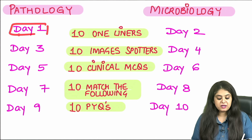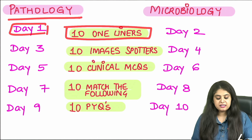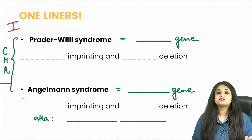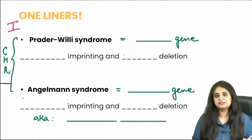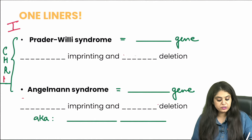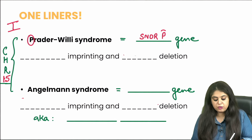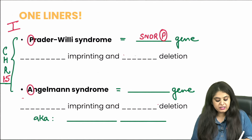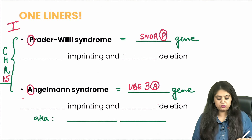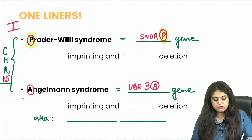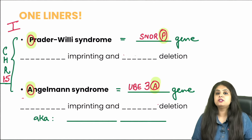Let's start with day one of pathology with 10 one-liners. The first topic is genetics — you always get a question on Prader-Willi syndrome and Angelman syndrome. Both involve chromosome 15 but different genes. For Prader-Willi syndrome it is the SNRPN gene, and for Angelman syndrome it is the ubiquitin UBE3A gene. SNRPN for Prader-Willi and UBE3A for Angelman — both on chromosome 15.